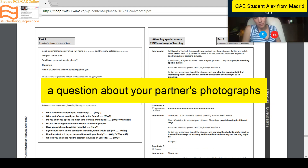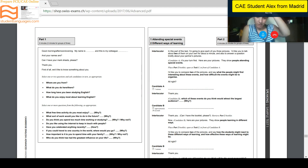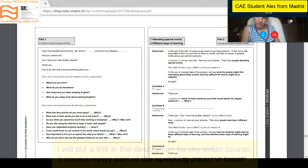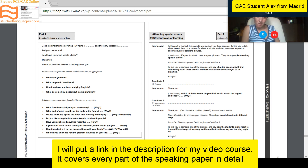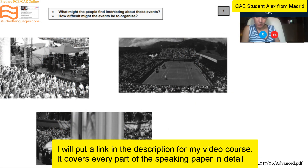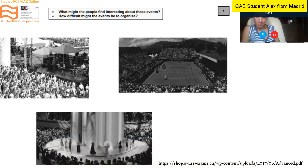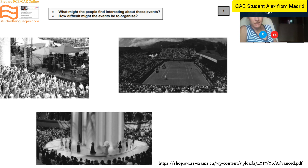Exactly — that's correct. Then they give you about thirty seconds to talk about your partner's pictures, so if you can speak for longer, that's good. All of these things are explained in my video course as well. Okay, so Alex, it's your turn first. Here are your pictures — they show people attending special events. What I'd like you to do is compare two of the pictures and say what the people might find interesting about these events, and how difficult the events might be to organize.